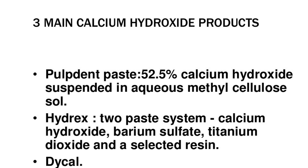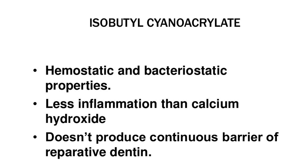Three main calcium hydroxide products: 1. Pulpdent paste – 52.5% calcium hydroxide suspended in aqueous methyl cellulose solution. 2. Hydrix – paste system containing calcium hydroxide, barium sulfate, titanium dioxide, and a selected resin. 3. Dycal isobutyl cyanoacrylate – has hemostatic and bacteriostatic properties, causes less inflammation than calcium hydroxide but doesn't produce a continuous barrier of reparative dentin.